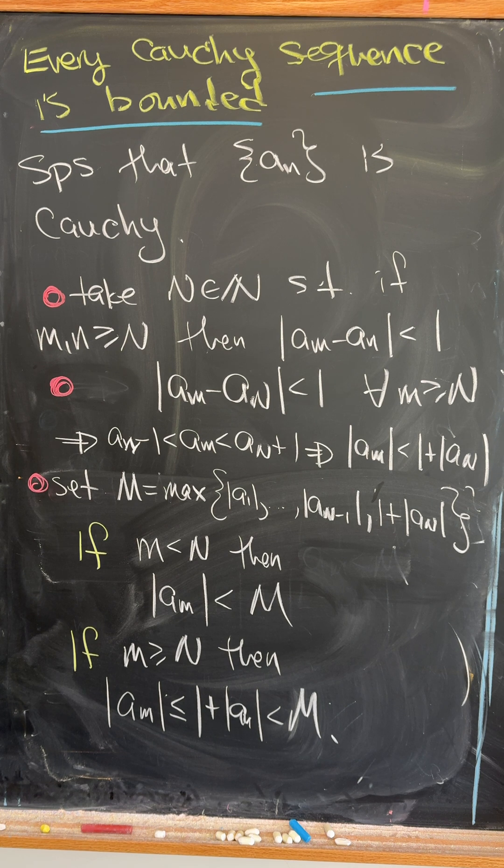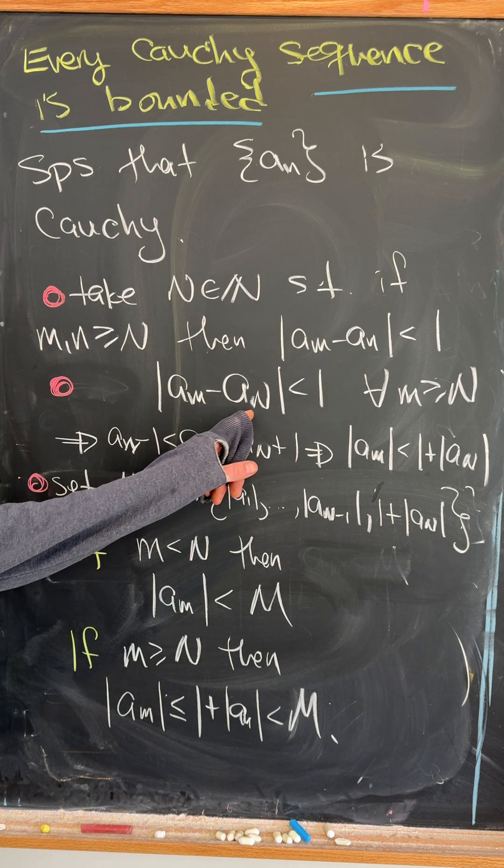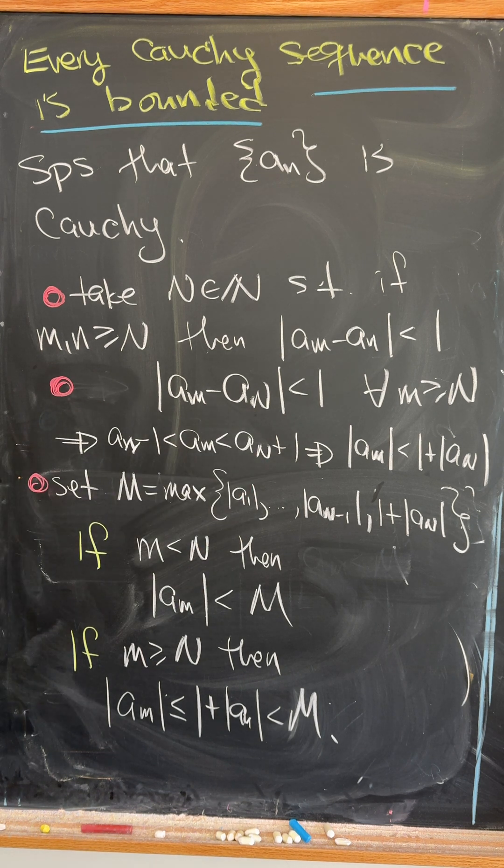But if that's less than one for all n bigger than or equal to N, then it's less than one for this single capital N. But we can massage this inequality to have the absolute value of a_m less than one plus absolute value a_n.